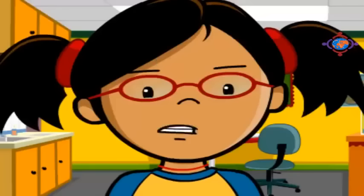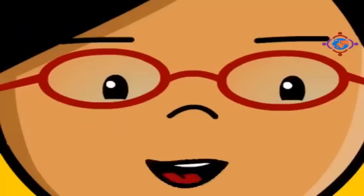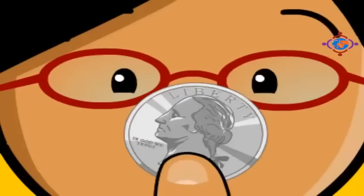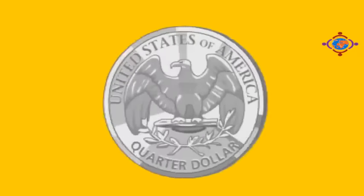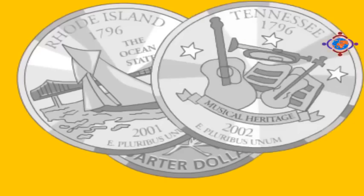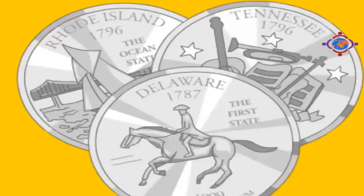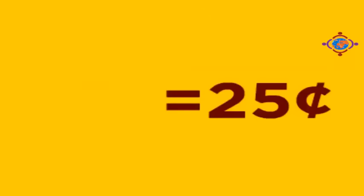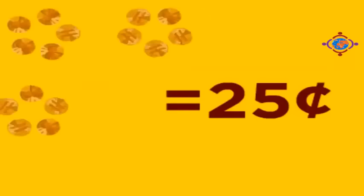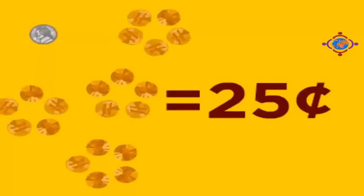There's one more coin here. This is a quarter — there's George Washington on the head and that's an eagle on the tail. Some quarters have a state on their tail instead of an eagle. A quarter is worth 25 cents, which is the same as 25 pennies or five nickels.